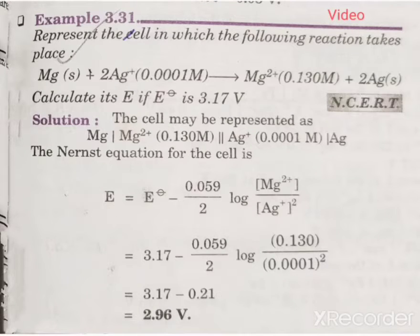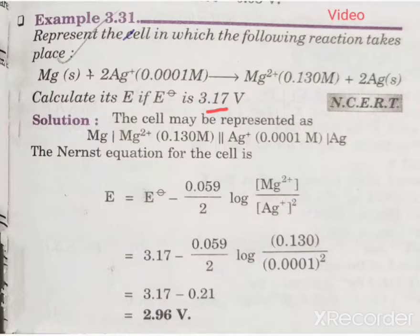In this video we are going to discuss some textbook problems in the chapter electrochemistry. One question is given: represent the cell in which the following reaction takes place. Calculate its E if the E° value is given as 3.17 volts. We have to write the cell representation and find out E_cell. We have already discussed the writing of cell representation, so let us apply that concept here.